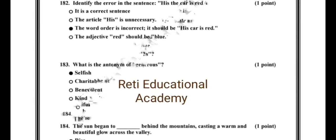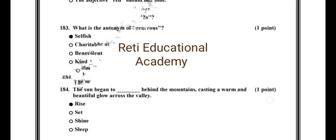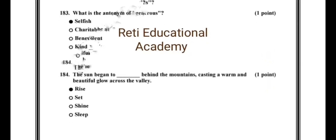Question number 183. What is the antonym of the generous? And the correct option is selfish. Question number 184. The sun began to dash behind the mountains, causing a warm and beautiful glow across the valley. And the correct option is rise.